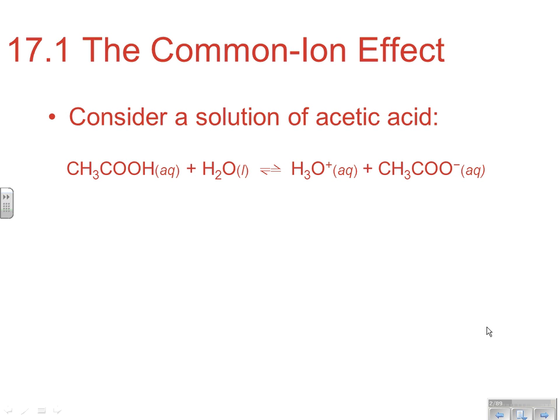Let's consider a solution of acetic acid. If you throw acetic acid in water, it ionizes to make H3O+, because it's an acid, and CH3COO-, which is the acetate anion. As a weak acid, it only partially ionizes, so we end up with an equilibrium system where we have created H3O+, which means we have increased the acidity or decreased the pH of the solution.